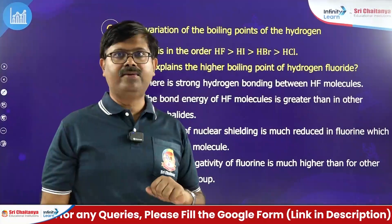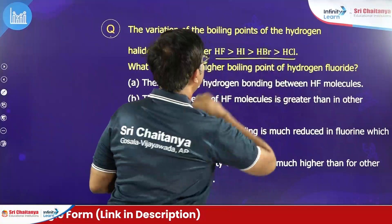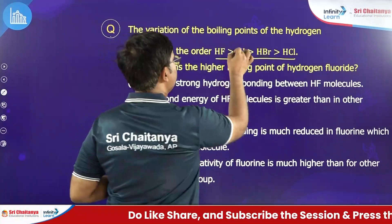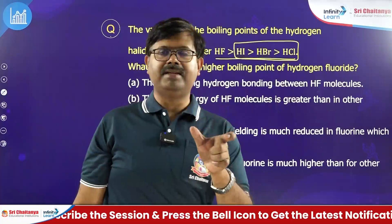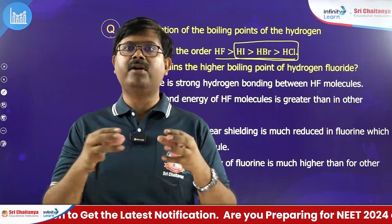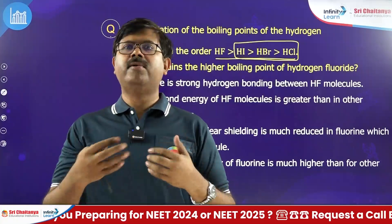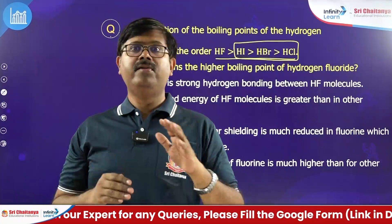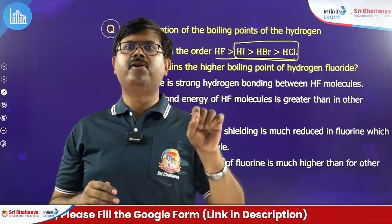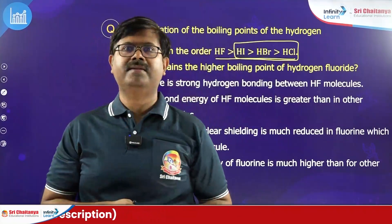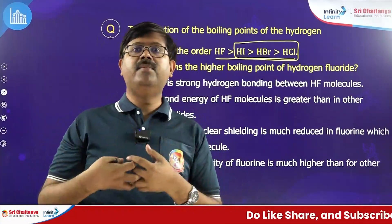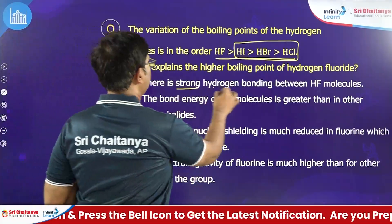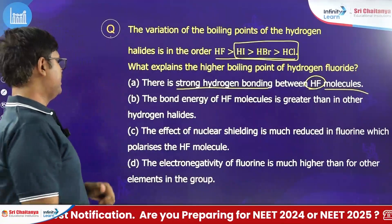The variation of boiling points of hydrogen halides follows the order HCl < HBr < HI. For these three, HI has higher van der Waals intermolecular forces because iodine is a bigger atom, so boiling point is highest, then HBr, then HCl. If you apply the same rule, HF should occupy the last place, but instead it occupies the first place. Why? Because in HF there are strong intermolecular forces called hydrogen bonding. Because of that, HF occupies the first place. There is a strong hydrogen bond between HF molecules — that is the right explanation.